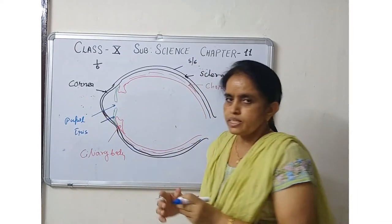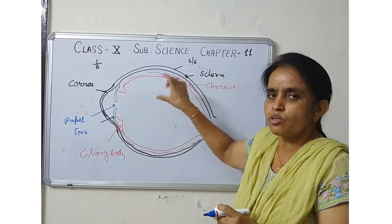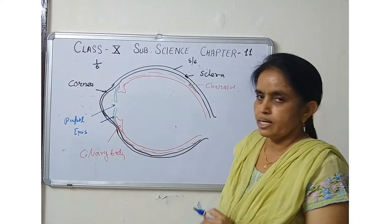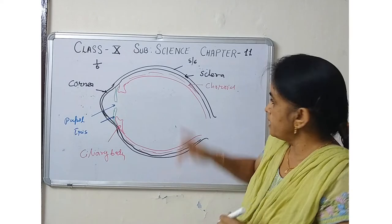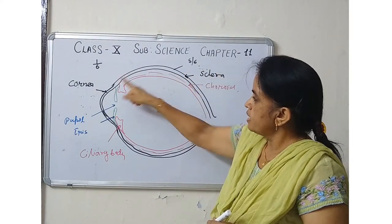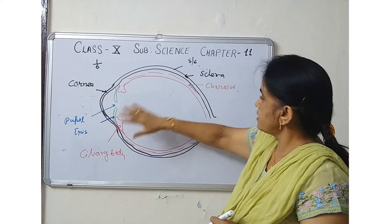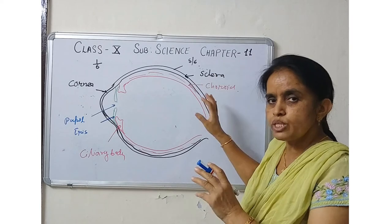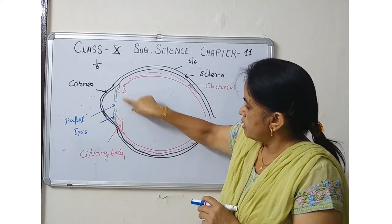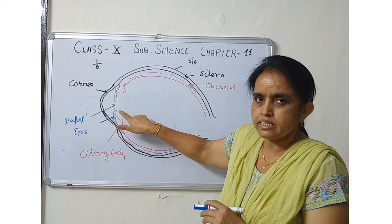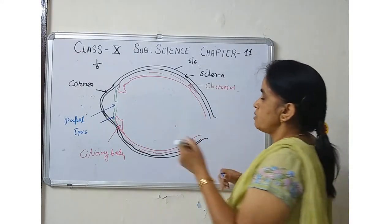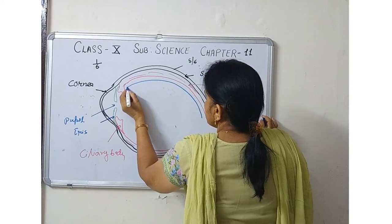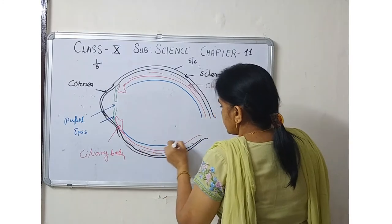When you label a diagram, always remember that the arrow should indicate the part being labeled. Children often draw the arrow pointing toward the word — that is incorrect. The outermost layer is the sclera, white in color. The front region is the cornea, which is transparent.